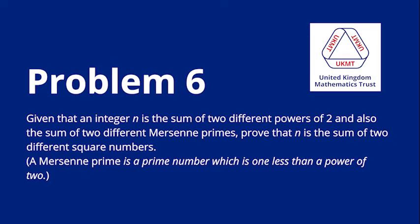Problem six. Given that an integer n is the sum of two different powers of two, and also the sum of two different Mersenne primes, prove that n is the sum of two different square numbers. A Mersenne prime is a prime number which is one less than a power of two.